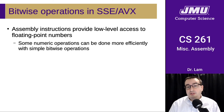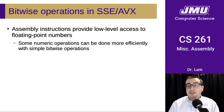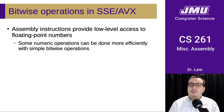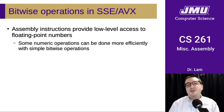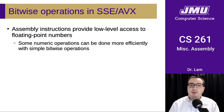Assembly instructions provide very low-level access to floating point numbers, and some operations can be done more efficiently with simple bitwise operations — treating them as if they were integers rather than floating point numbers. It's worth pausing to think about what those might be, remembering that the first bit of a floating point number is the sign bit.